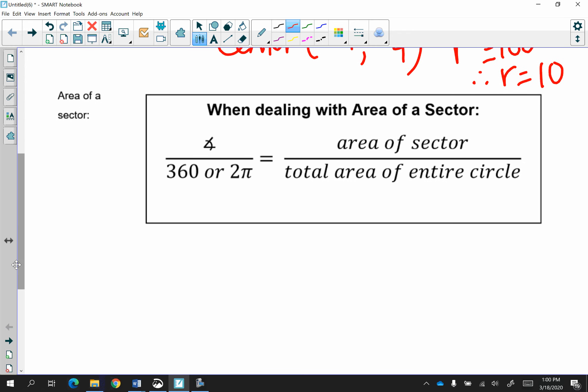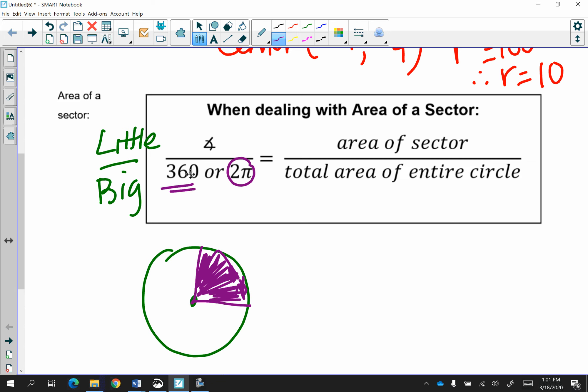How about the area of a sector? Remember, it is always little to big. What is a sector? If we have a circle, and we have a piece of the circle, and this is the area of the sector, the shaded sector, just like a slice of pizza. If something is given in terms of pi, use radians. If it's given in degrees, use 360. The area of the circle is pi r squared.